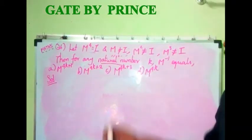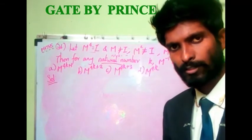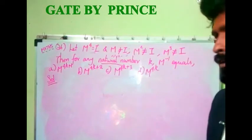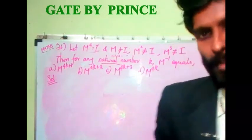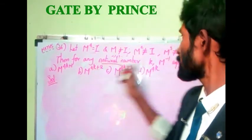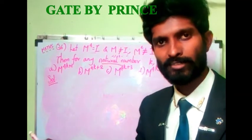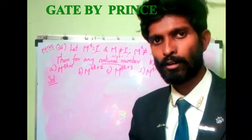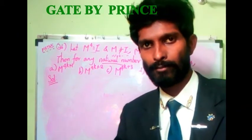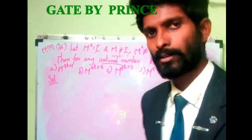From the question alone I cannot directly find m inverse, so I will work from the answer options instead. What I do is multiply each option by m, because if a choice equals m inverse, then multiplying it by m should give identity. So in all the options I'm going to multiply by m — if I get identity, that answer is balanced and correct.